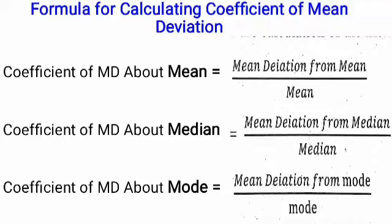For the calculation of the coefficient of mean deviation, there are three types. First, coefficient of mean deviation about mean is equal to mean deviation from mean divided by mean. Second, coefficient of mean deviation about median is equal to mean deviation from median divided by median. Third, coefficient of mean deviation about mode is equal to mean deviation from mode divided by mode. We calculate the ratio of the mean deviation to the average used.